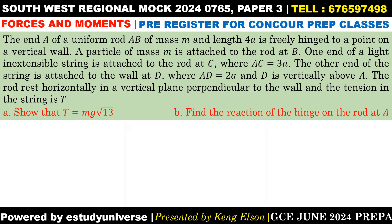We are going to solve the a and b parts of the question. The question reads: the end A of a uniform rod AB of mass m and length 4a is freely hinged to a point on a vertical wall. A particle of mass m is attached to the rod at B. One end of a light inextensible string is attached to the rod at C, where AC is 3a. The other end of the string is attached to the wall at D, where AD is 2a and D is vertically above A. The rod rests horizontally in a vertical plane perpendicular to the wall and the tension in the string is T.